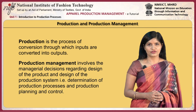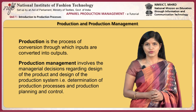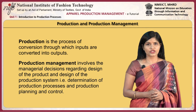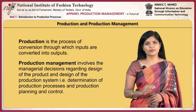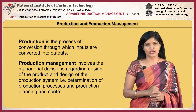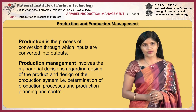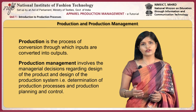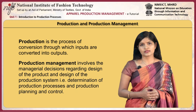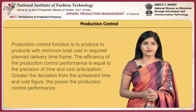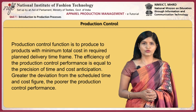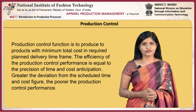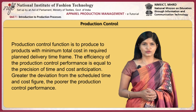Production is a process of conversion through which inputs are converted into outputs. Appropriate design of a production system ensures coordination of various production activities. There is no single universal pattern of production system; it varies from one enterprise to another. Production management involves managerial decisions regarding product design, design of production system, determination of production processes, and production planning and control. The efficiency of production control performance equals precision of time and cost anticipation.